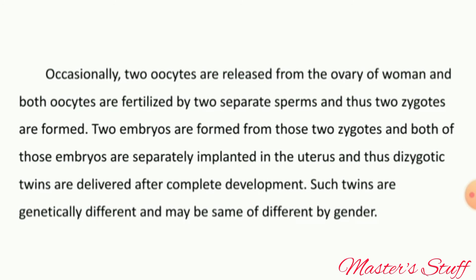Occasionally, two ova are released from a woman's ovaries simultaneously. These are fertilized separately, and dizygotic twins are completely developed and delivered. Dizygotic twins are genetically different from each other, unlike monozygotic twins.